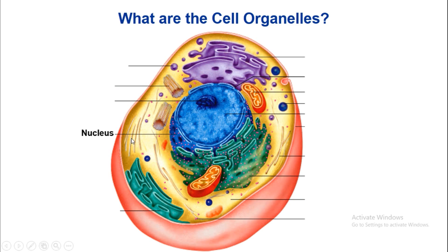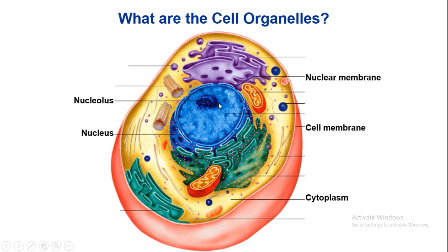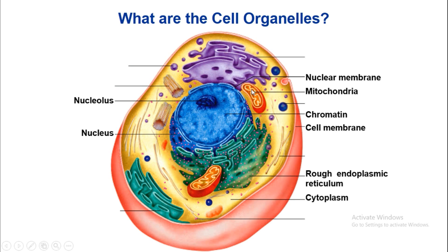We begin with the nucleus, which is located here. Next is the cell membrane — the structure which covers the cell. The cytoplasm is this region here. Inside the nucleus is the nucleolus. The membrane of the nucleus is known as the nuclear membrane, and the chromatin material is present in the nucleus.